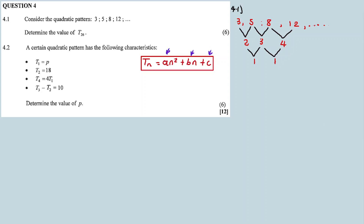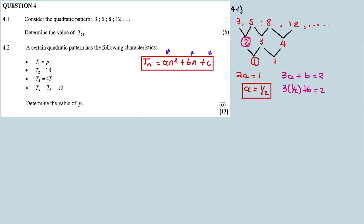The second common difference is 1. Now we calculate a, b, and c. Using 2a equals 1 — which comes from the second common difference — we divide both sides by 2 to get a equals 1/2. To calculate b, we use the formula 3a plus b equals 2, where 2 is the first difference. Substituting a: 3 times 1/2 is 3/2. So 3/2 plus b equals 2, which gives b equals 2 minus 3/2, so b equals 1/2.